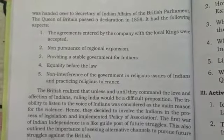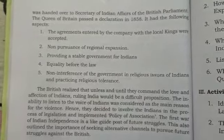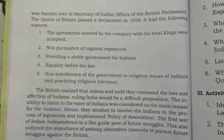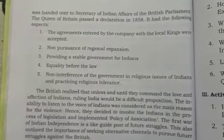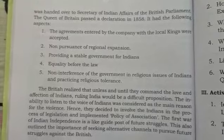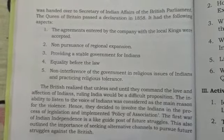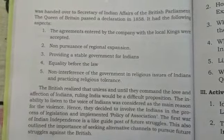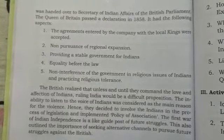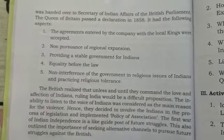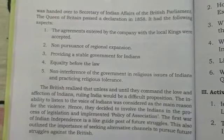The Queen of Britain passed a declaration in 1858 with the following aspects: the agreements entered by the Company with locals were accepted; no pursuance of territorial expansion; providing a stable government for Indians; equality before law; no interference of the government in religious issues of Indians; and practicing religious tolerance.